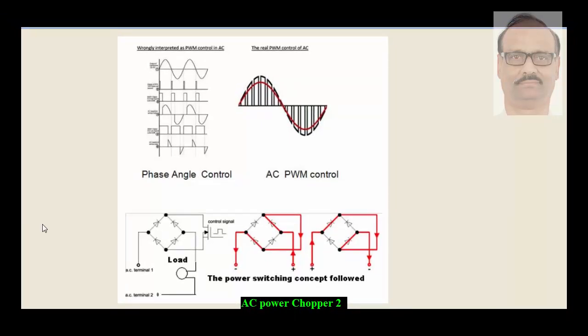AC chopper is sometimes confused by phase angle control of thyristors where the waveform is in this fashion, a part of the cycle is cut and the same thing happens for the negative half cycle also. As compared to the AC PWM control or AC chopper, we have every cycle, every half cycle being chopped so that we get a better waveform. The power factor is better and the third harmonic distortion THD in this case is 62 percent higher than this. So it is always better to go in for this chopper arrangement than the phase angle control of thyristor.